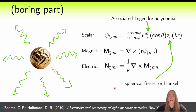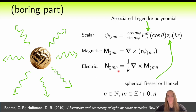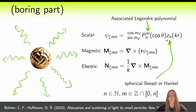Vector harmonics are divided into the so-called magnetic and electric types. They are also labeled with indices m and n, where m is positive and less than or equal to n. The function z can be either a spherical Bessel or a Hankel function, depending on the conditions of the problem.